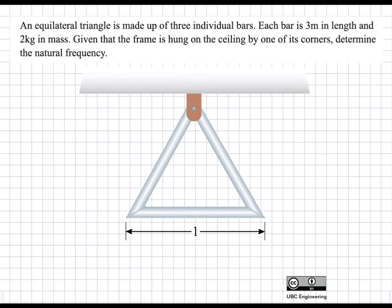In this problem, a triangle is made of three bars, and each bar is three meters in length and two kilograms in mass. It oscillates about one of the corners. We're asked to determine the natural frequency of this system. The first thing we do when we need to find the natural frequency is draw the system in a displaced position. Based on that, we can then do the free body diagram, write in all the forces, and then do either sum of forces or sum of moments depending on the situation.